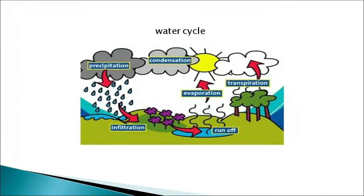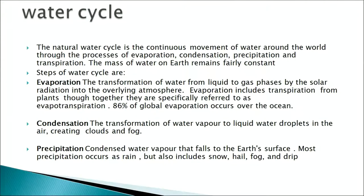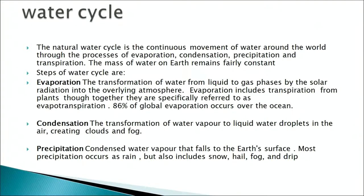The water cycle moves water around the world through evaporation, condensation and precipitation. Evaporation is the transformation of water from the liquid phase into vapor; solar radiation is important in this process and the major amount of evaporation takes place over the oceans. Condensation is the transformation of water vapor into droplets in the air, creating clouds and fog. Precipitation is the condensed water vapor that falls on the earth's surface due to gravity in the form of rainfall, drizzling, hail or fog.